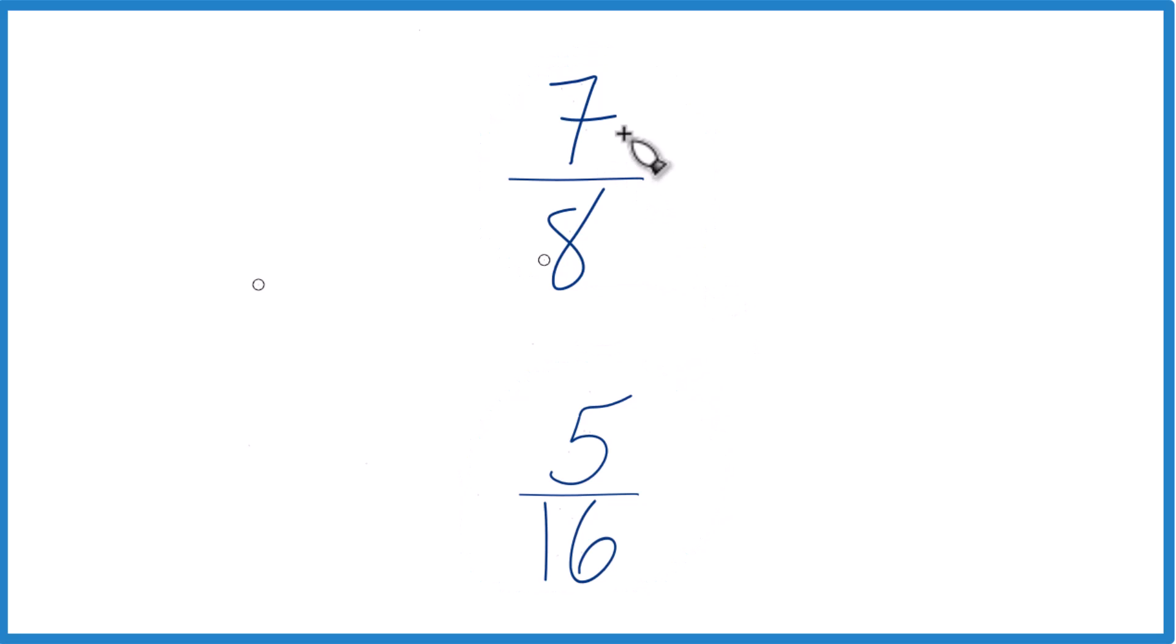So to do that, we could just divide 7 by 8 on a calculator, 5 by 16, get decimals and compare them. That'd tell you if 7/8 was greater than, less than, or equal to 5/16.